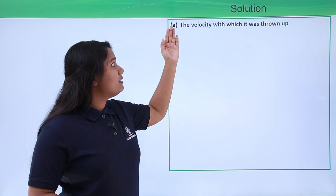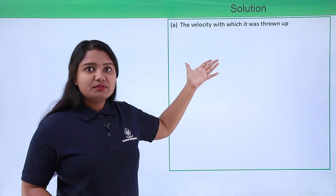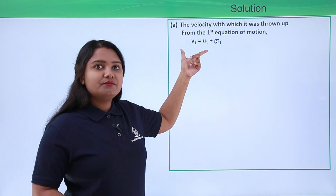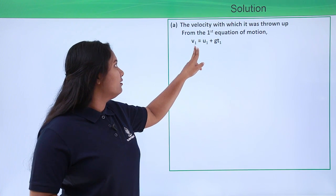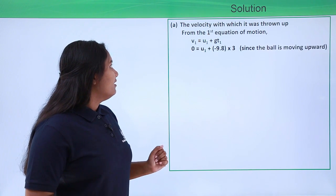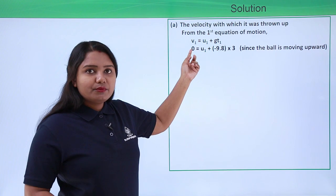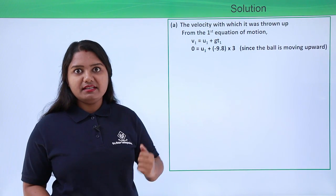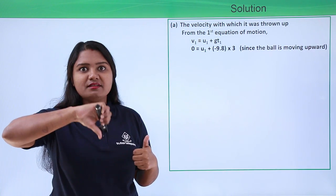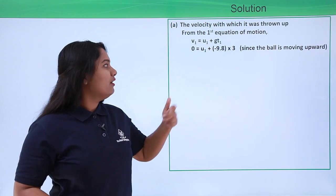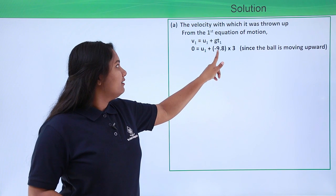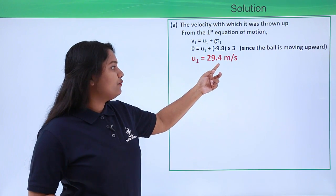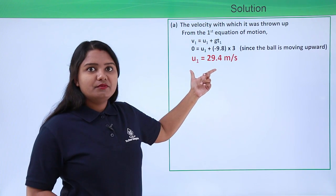The first thing to find is the velocity with which the ball was thrown up. Using the first equation of motion: v1 equals u1 plus g·t1. Substituting values: 0 equals u1 plus (−9.8) times 3. Since the ball moves upward and gravity acts opposite to the velocity, g is taken as negative. This gives u1 equals 29.4 meters per second.